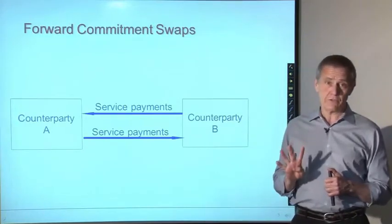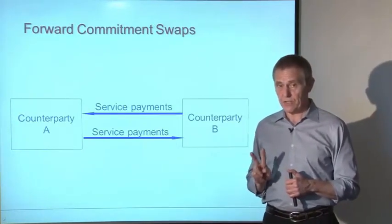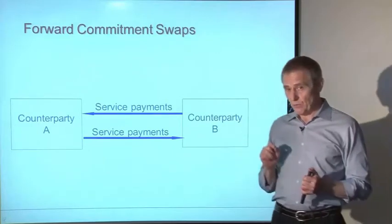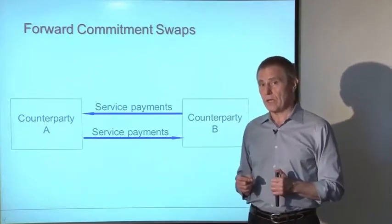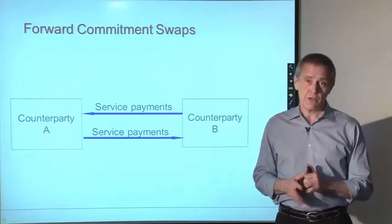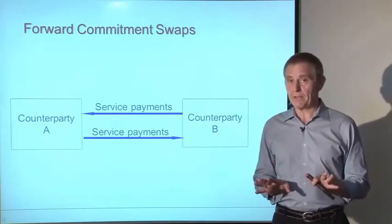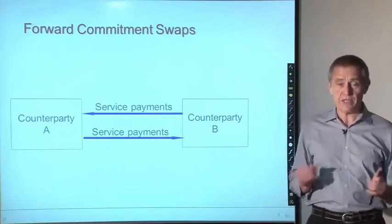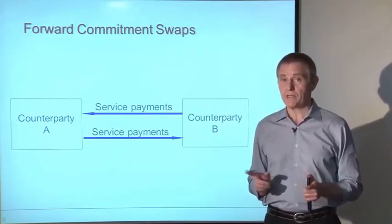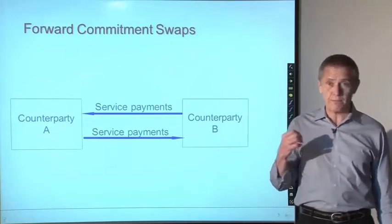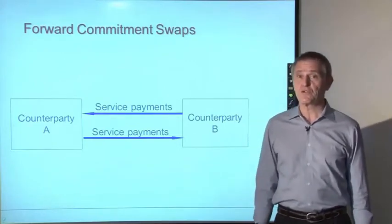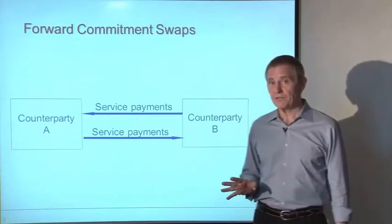For example, a two-year quarterly-settled interest rate swap has eight settlement dates over the two-year life of the contract — four per year. That structure can really be deconstructed into a package of eight interest rate forward contracts: one deliverable in three months, another in six months, nine months, twelve months, and so on quarterly out to two years. You don't need to understand swaps this way at an introductory level, but that is the economic nature of swap contracts.